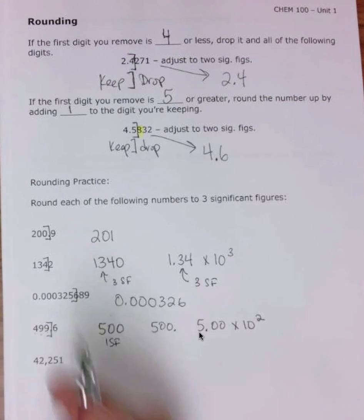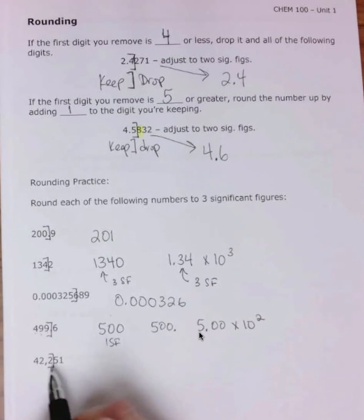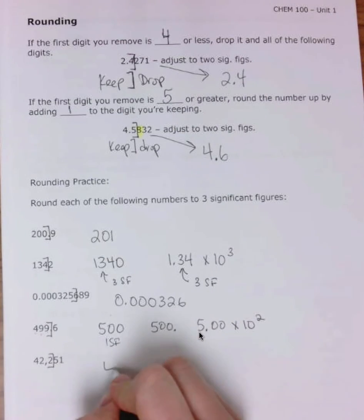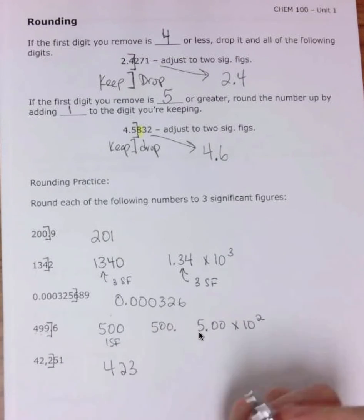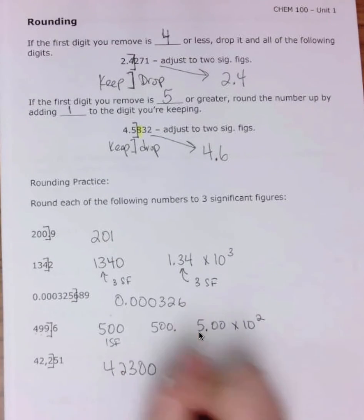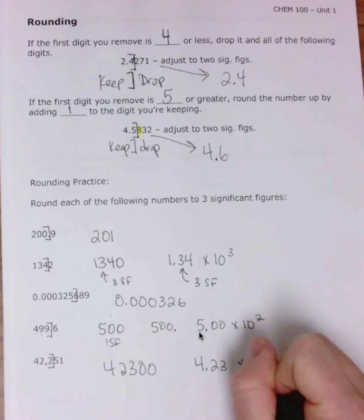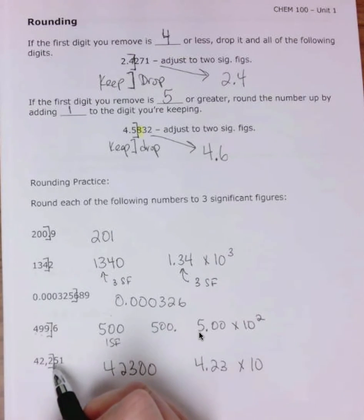For the last rounding example, three sig figs would land here. Since the next digit is 5 or greater, you round up. For a large number like 42,300-something, if you only give someone $423 when you owe them more, they'd be unhappy. You need those zeros as placeholders, or you can write 4.23 × 10⁴.